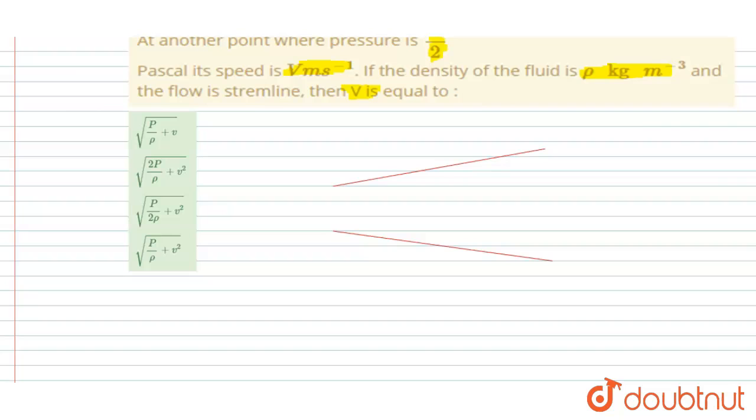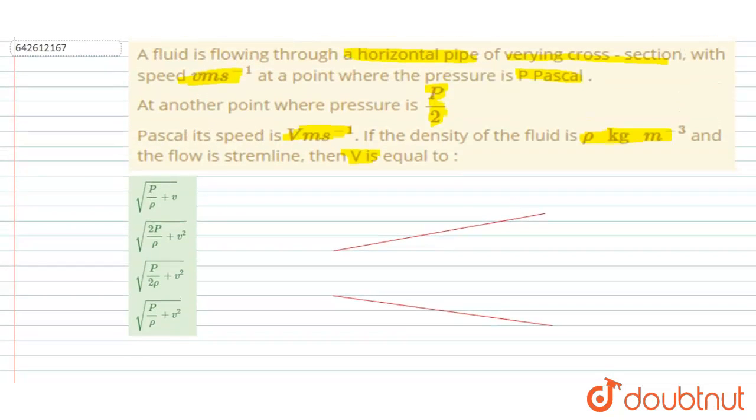It is said that at one point the velocity is v, and at another point the velocity is capital V and pressure decreased. So pressure decreased and the velocity is capital V. This is the velocity small v and here the pressure is p by 2, and here the pressure is p.